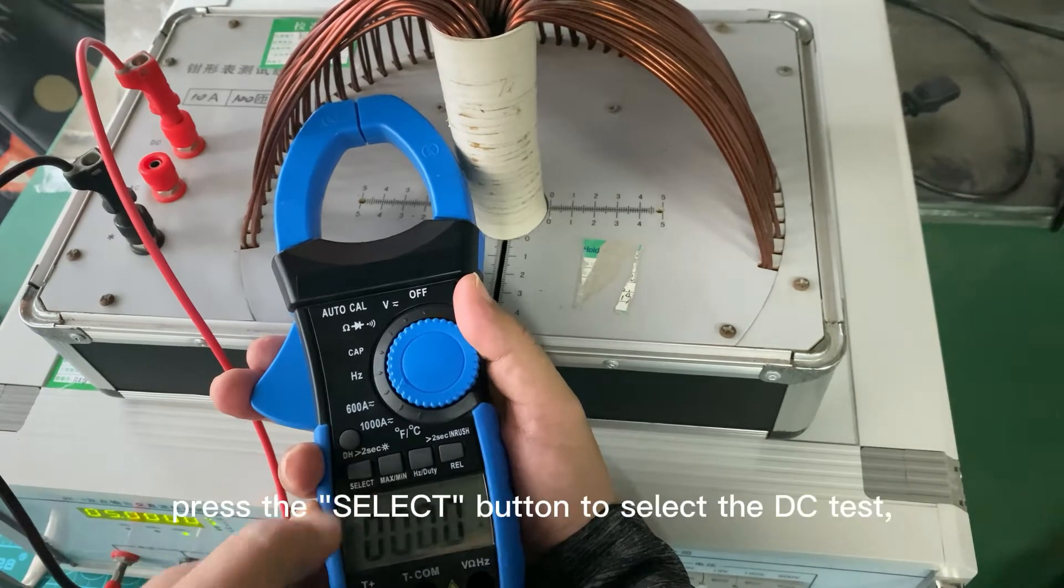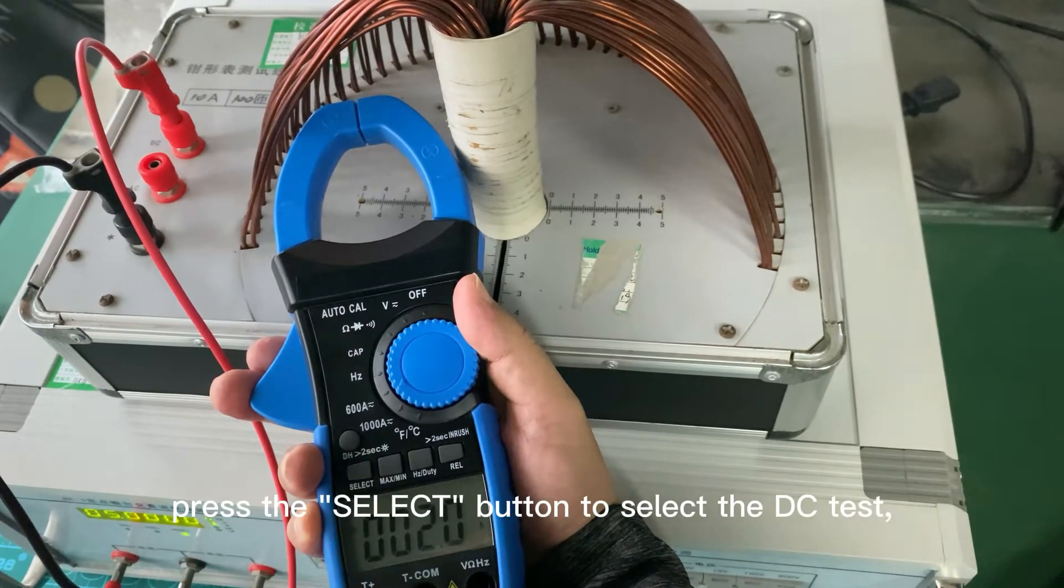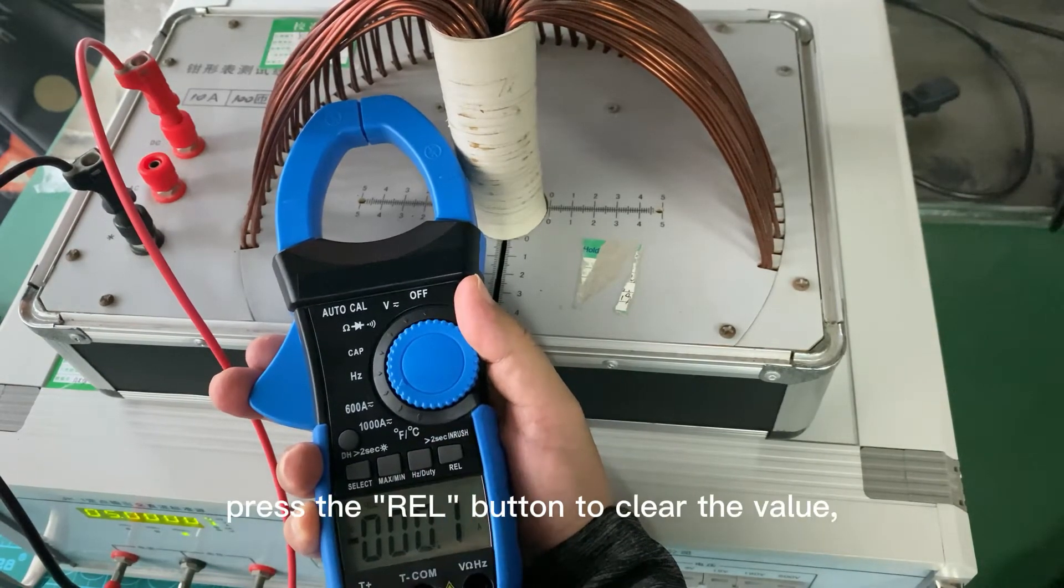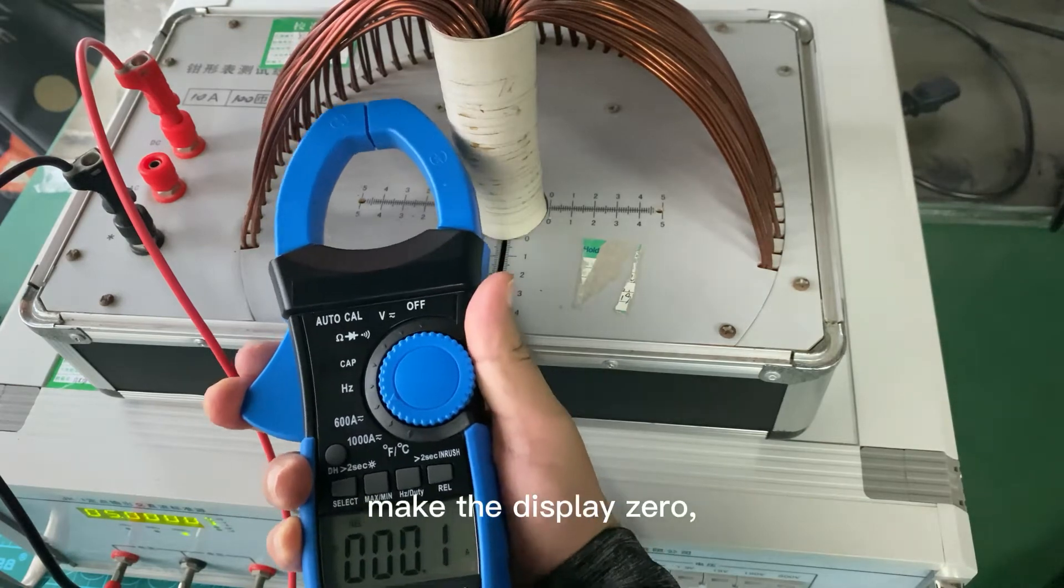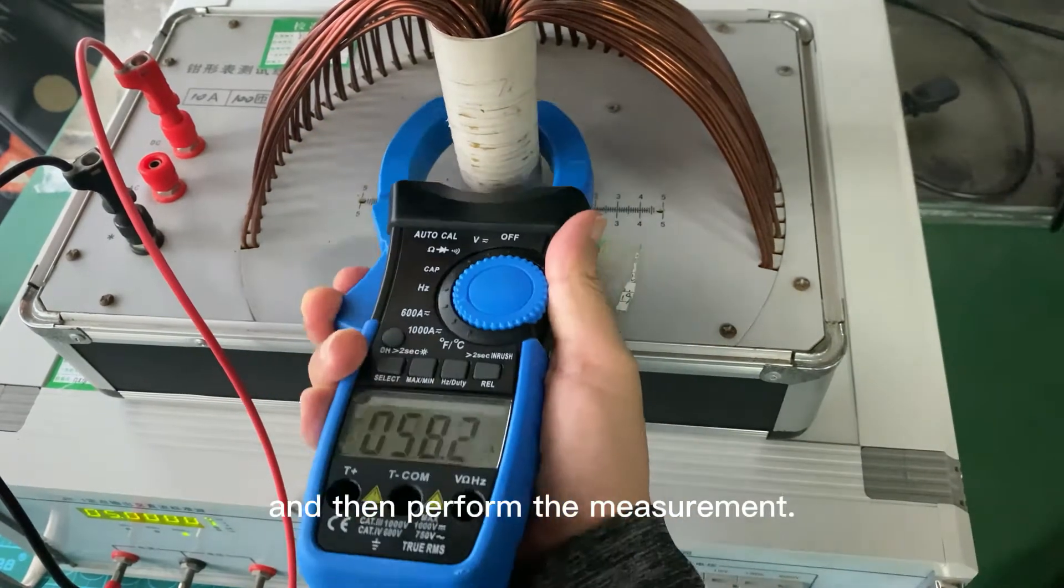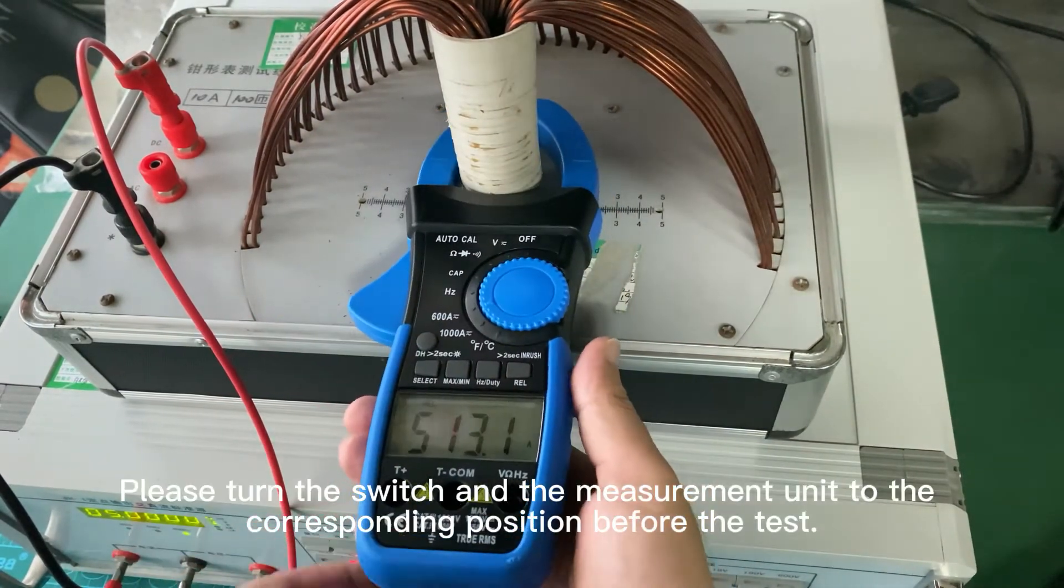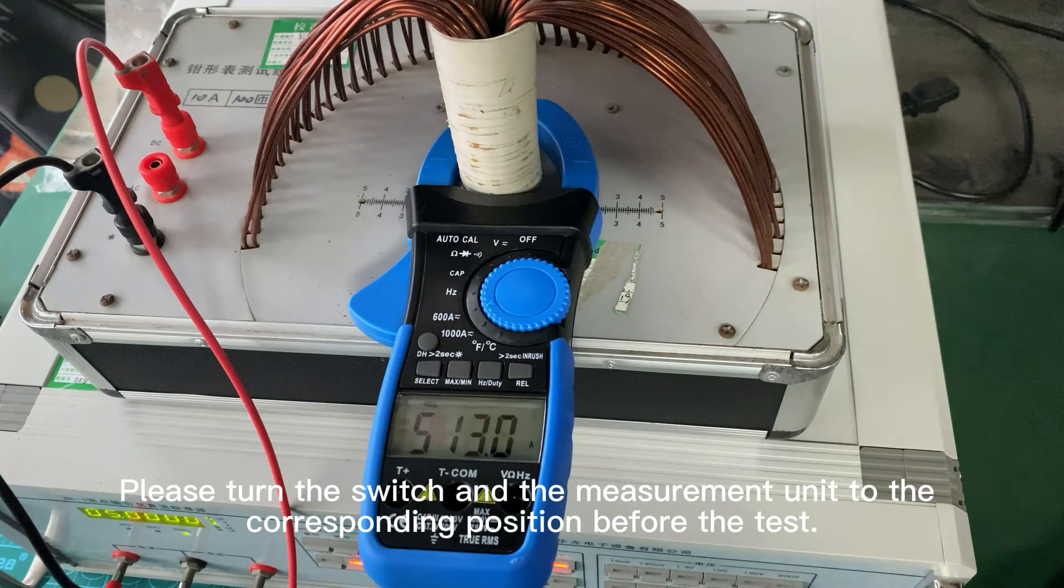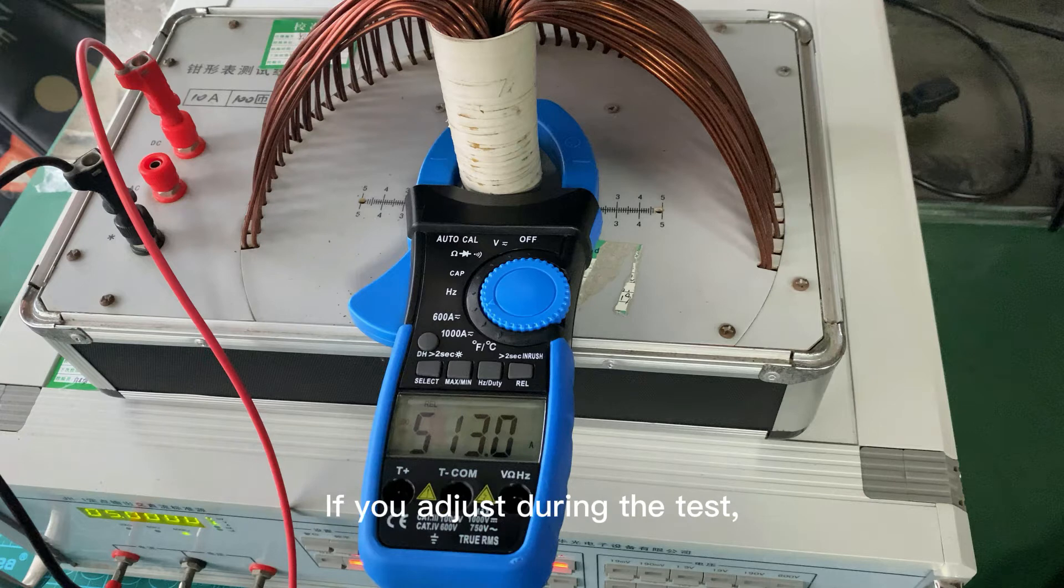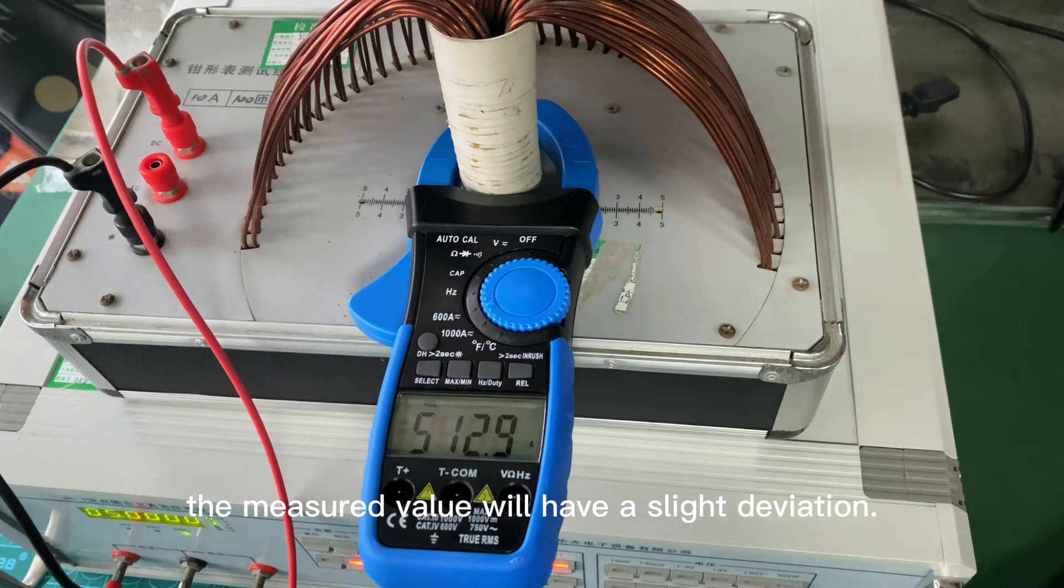DC current measurement: Please turn the switch and measurement unit to the corresponding position before the test. If you adjust during the test, the measured value will have a slight deviation.